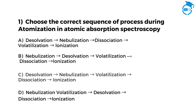The first question is: choose the correct sequence of processes during atomization in atomic absorption spectroscopy. Option A: desolvation, nebulization, dissociation, volatilization, ionization. Option B: nebulization, desolvation, volatilization, dissociation, ionization. Option C: desolvation, nebulization, volatilization, dissociation, ionization. Option D: nebulization, volatilization, desolvation, dissociation, ionization. If you know the answer, mention it in the comments. The time starts now.